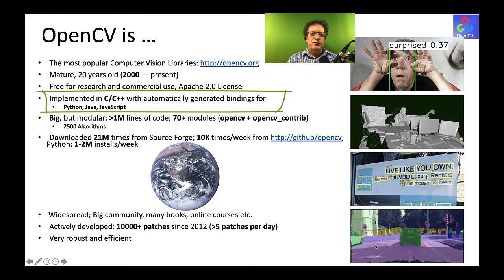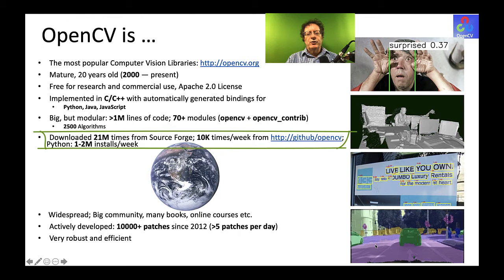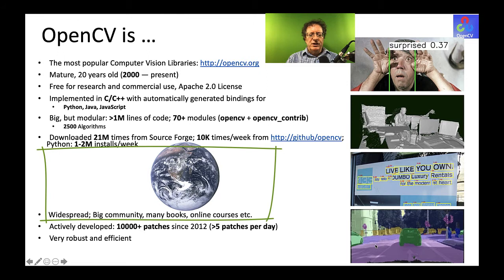It's a comprehensive library with a million lines of code, 70-plus modules, and 2,500 algorithms — though it can be compiled down to smaller amounts. It's been downloaded over 21 million times from SourceForge, and from GitHub we're getting about 10,000 downloads a week. In Python, there are one to two million installs per week. It has a large, widespread community with a lot of support from courses, Stack Overflow, and other resources.